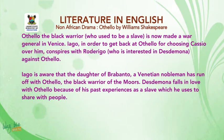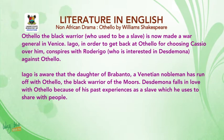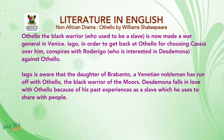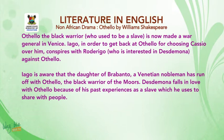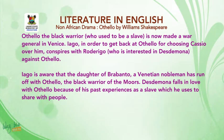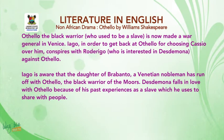Othello, the black warrior who used to be a slave, is now made a war general in Venice. Iago, in order to get back at Othello for choosing Cassio over him, conspires with Rodrigo, who is interested in Desdemona, against Othello. Iago is aware that the daughter of Brabantio, a Venetian nobleman, has run off with Othello, the black warrior of the Moors. Desdemona falls in love with Othello because of his past experiences as a slave, which he used to share with people.